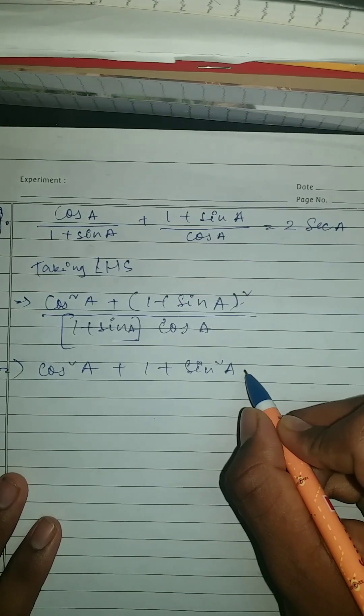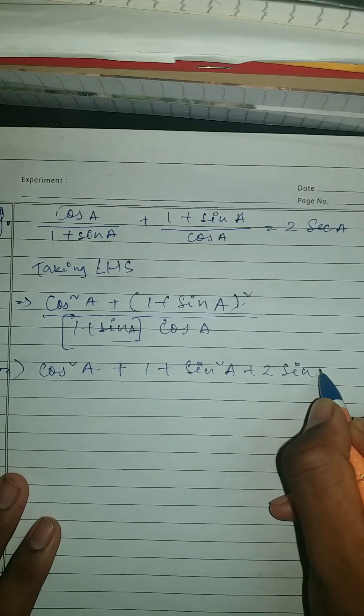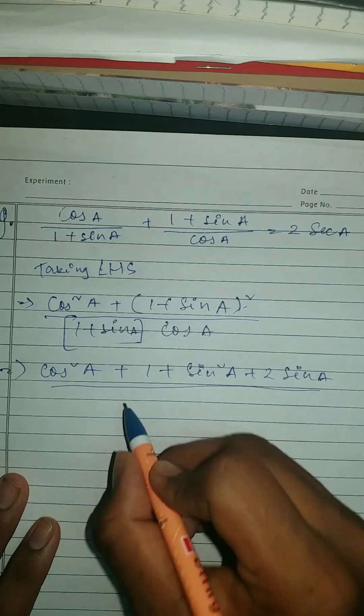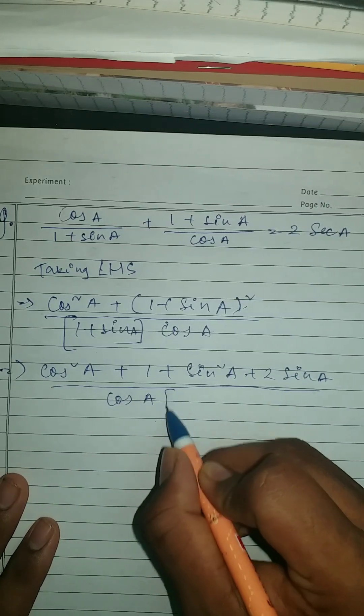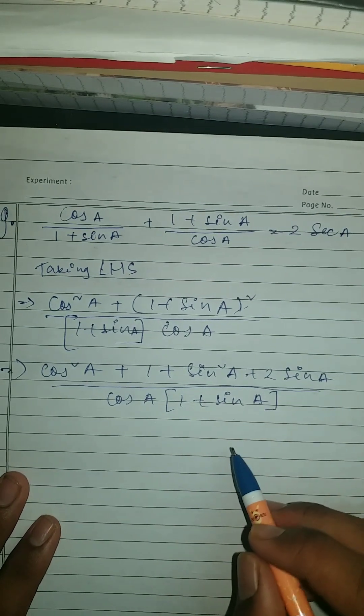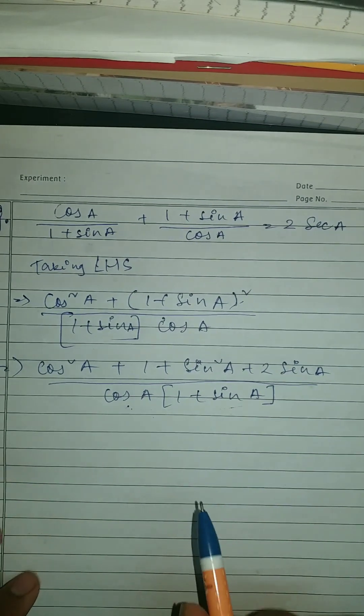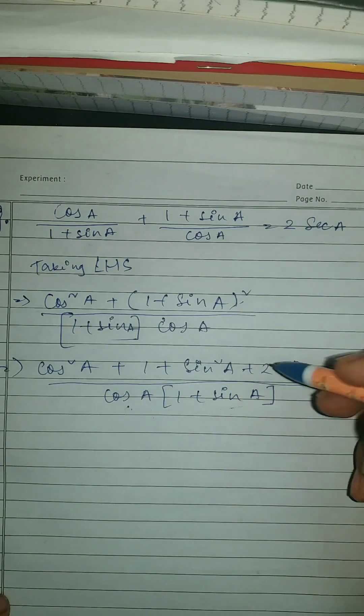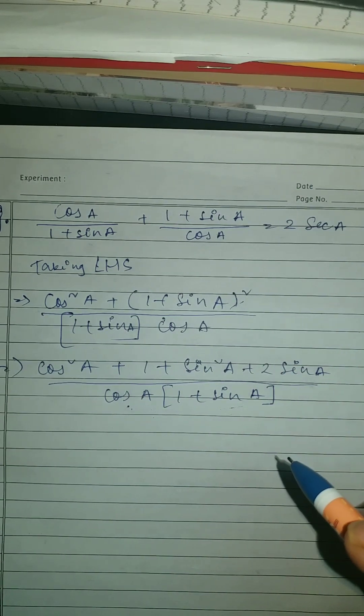Then it should be plus 2 sine A cos A (1 plus sine A). So now you don't have to do anything in the denominator, you're going to solve in the numerator.